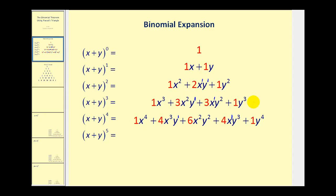Now, these coefficients in red actually make up what's called Pascal's Triangle. There's a special way to generate these numbers by starting with a triangle of ones. Each row starts with a one and ends with a one, and then the terms in the middle are formed by adding the two terms above it. One plus one gives us two. The third row has a one and a one at the start and end; one plus two gives us three, and two plus one gives us three.